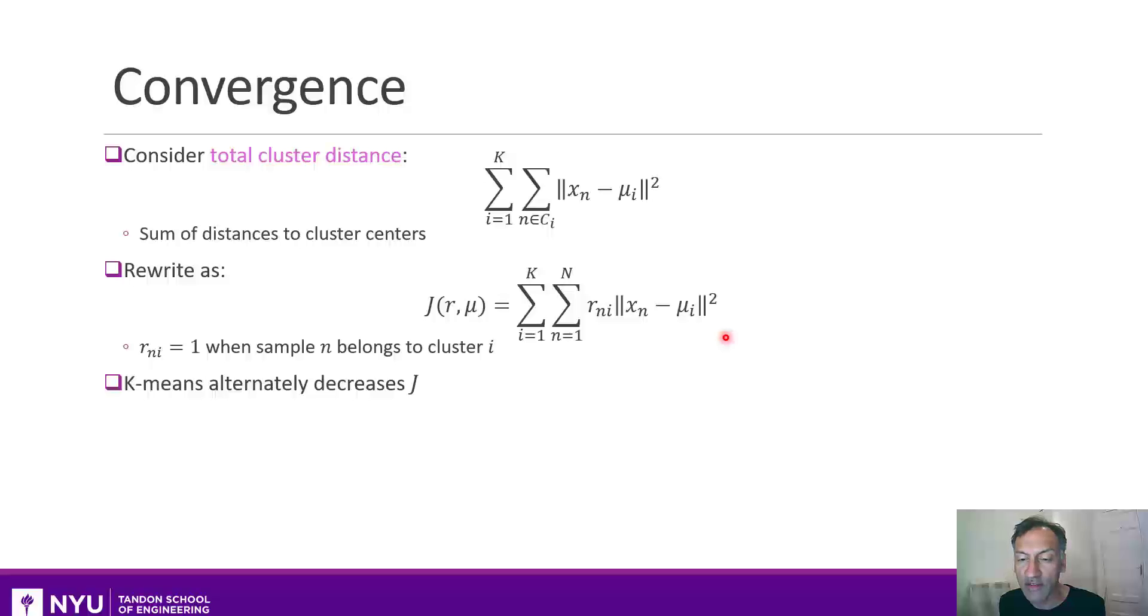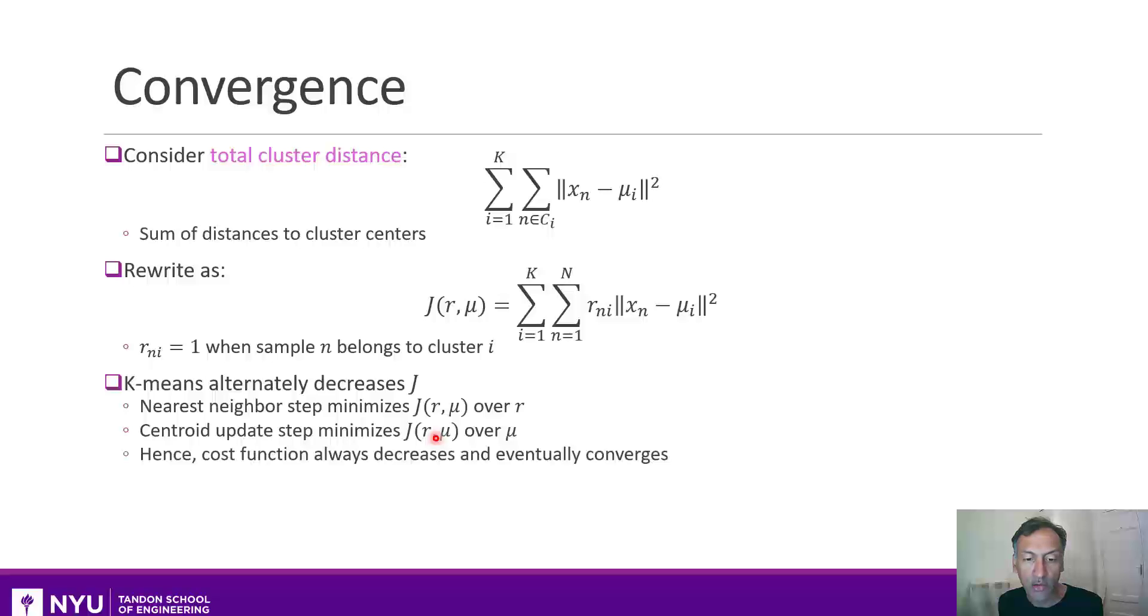What k-means does is you can see that it really alternately decreases J in the following sense. When you do the nearest neighbor step, it's really updating those r_ni's in a way to minimize this cost function over r, keeping the mu's constant. And then when you update the mu's in k-means, it's minimizing this cost function over mu, keeping the r's constant. And so if you keep on repeating this, this cost function is going down and down, and since it's bounded below, it will eventually converge. So it will always converge, but it really only converges for sure to a local minima. Meaning, kind of like what we saw in gradient descent, that different initial conditions can result in different final solutions, and some of them could end up with a lower total cluster distance than others.